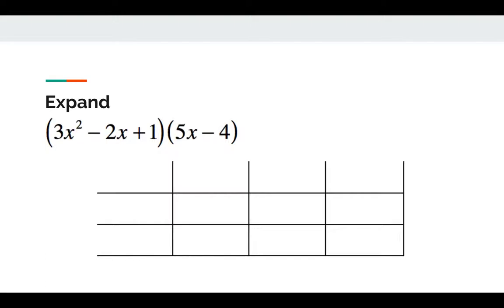We have an example to explain with. This is to expand (3x² - 2x + 1) with another polynomial (5x - 4). To begin with, we must draw a grid with 3 times 2, which is shown in the box.